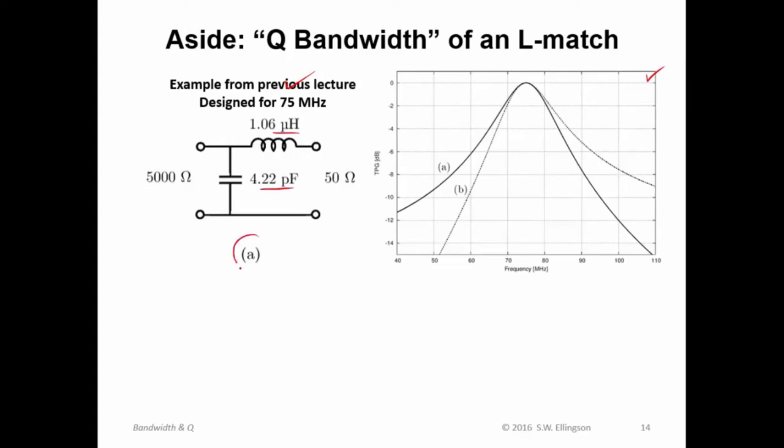So for this circuit here, it's this curve here. And the TPG is one. That is zero dB at the design frequency, 75 megahertz. And all the frequencies is less than one. So there is a three dB bandwidth here. There is a 10 dB bandwidth here. And so on. There are many different bandwidths that we could define.